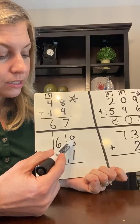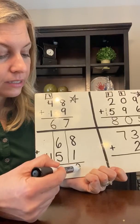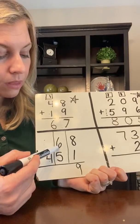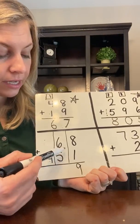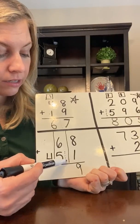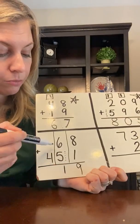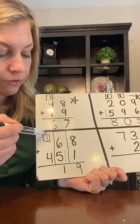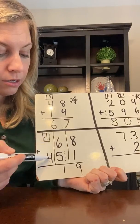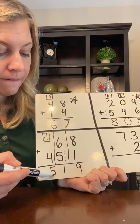Let's look at the ones. Eight and one more is nine. Six plus five. Six, seven, eight, nine, 10, 11. Okay. I have to move it, move it. I have to move it, move it. One plus four is five.